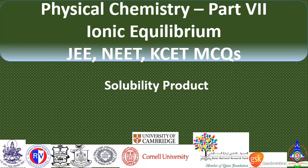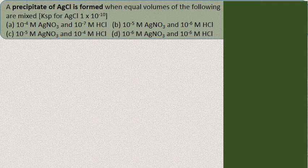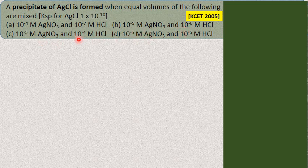Enjoy this video and do subscribe to my channel. A precipitate of silver chloride is formed when equal volumes of the following mixtures are mixed. Silver nitrate and HCl of different concentrations are mixed in four different manners, and under which condition silver nitrate will precipitate out is to be determined. They have given the solubility product, Ksp, for silver chloride as 1 × 10⁻¹⁰.